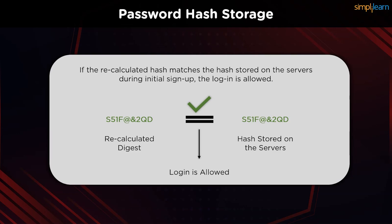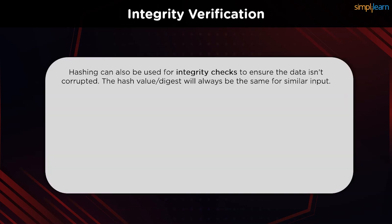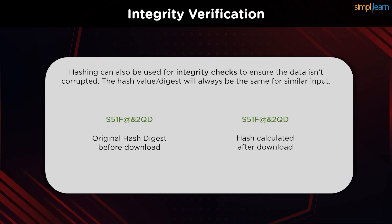In the unfortunate event of a data breach or a hack, we also use hashing when it comes to verifying data integrity. When a file is uploaded onto the internet, it is passed through a hash function. Once the hash digest is generated, it is uploaded along with the file. When a user downloads the file, they can also get the hash downloaded with it. Once the file is run through the hash function again, the digest is compared to the one provided by the uploader. If the values of both digests are the same, the data integrity is verified and we can be sure the data was not corrupted in transit.